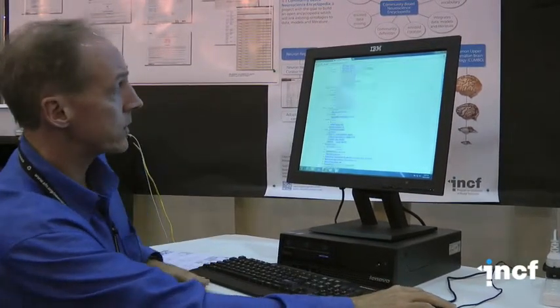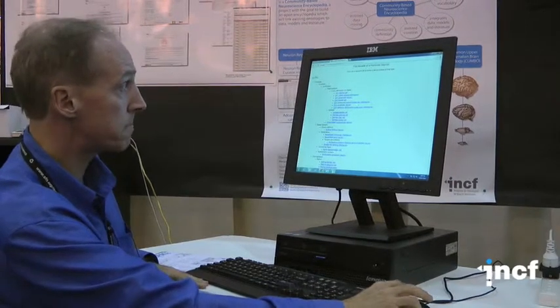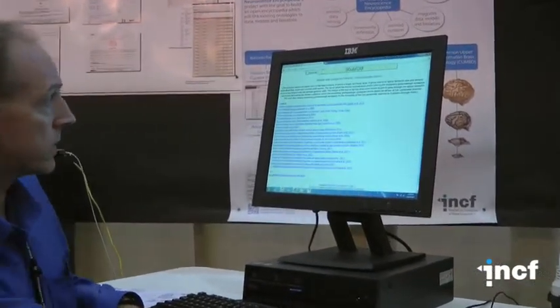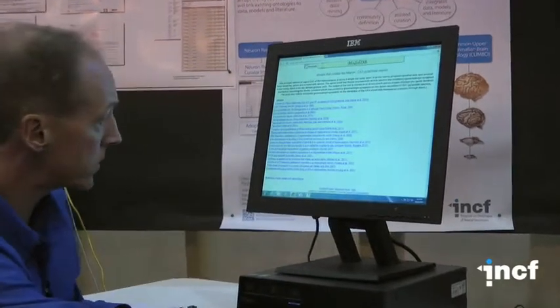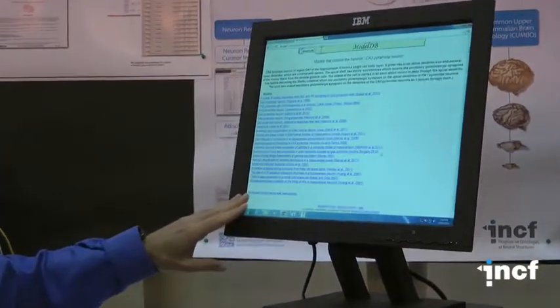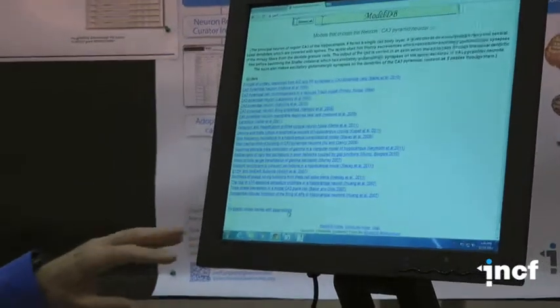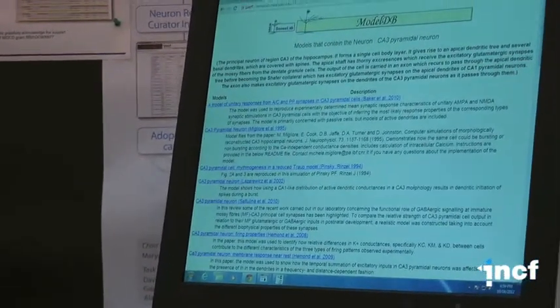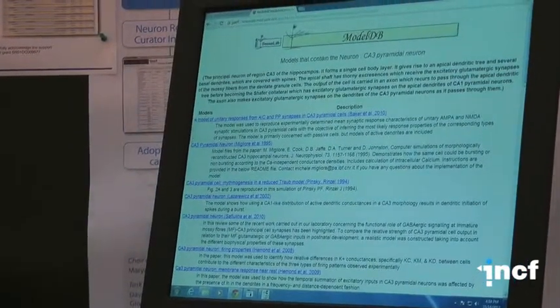If we click on one of these cell types, for example, the CA1 pyramidal neuron, you can see a list of attributed models, and we can re-display the model names with descriptions, which can help a modeler find a model that's of interest to them.